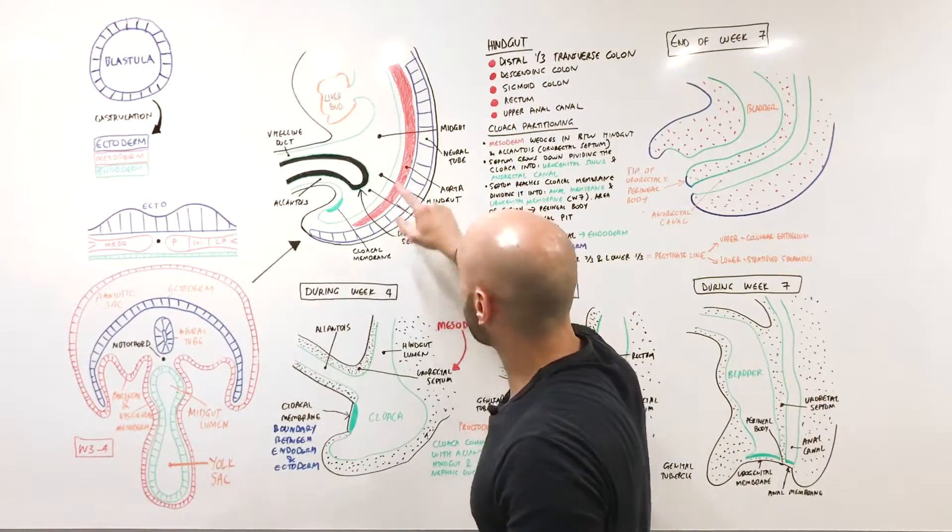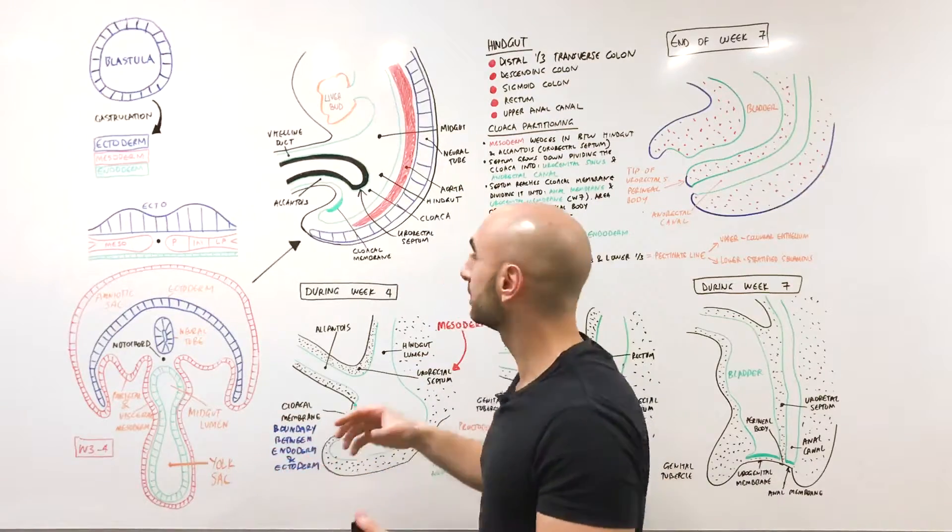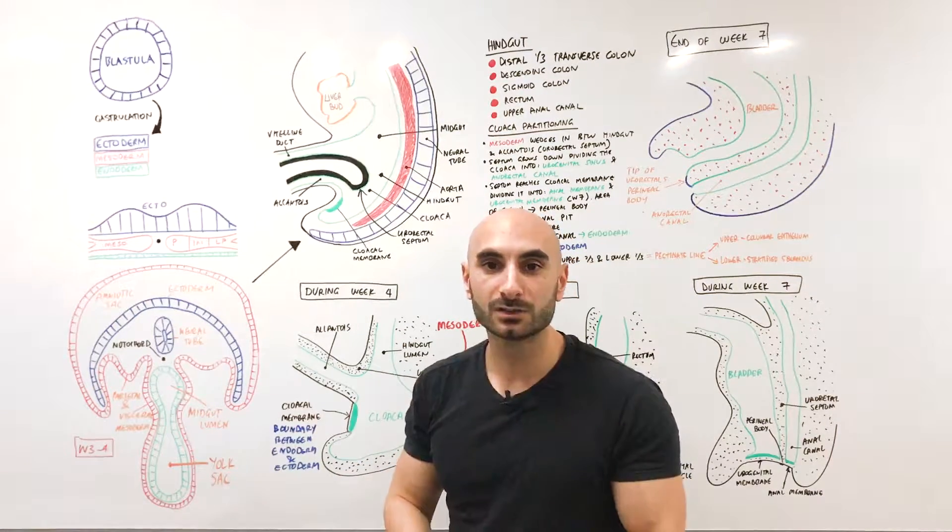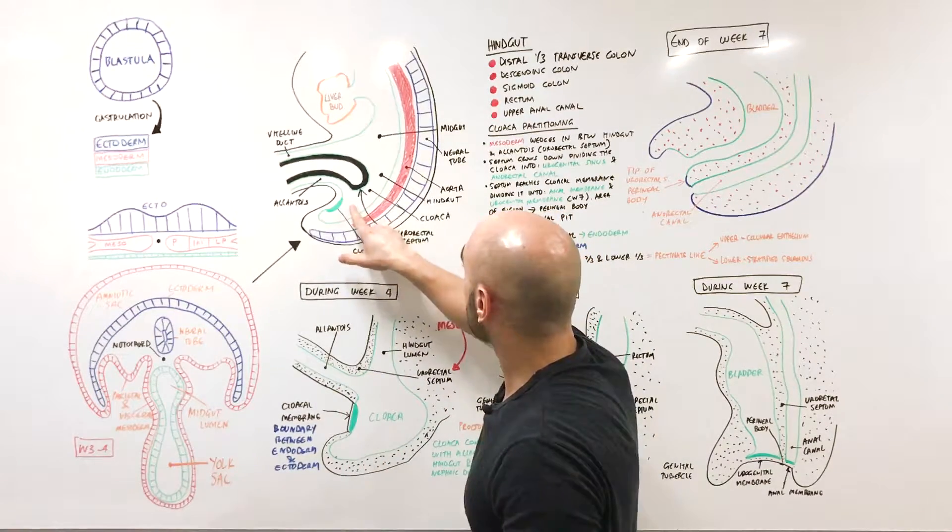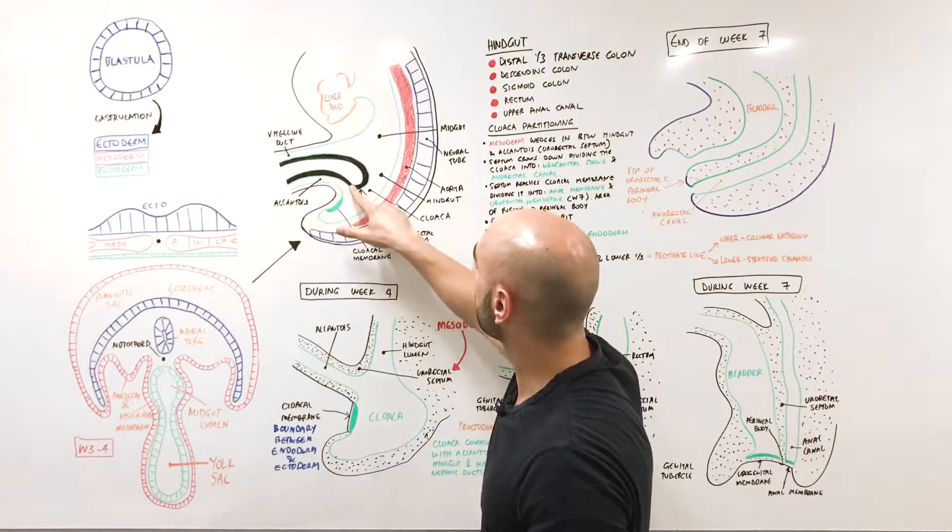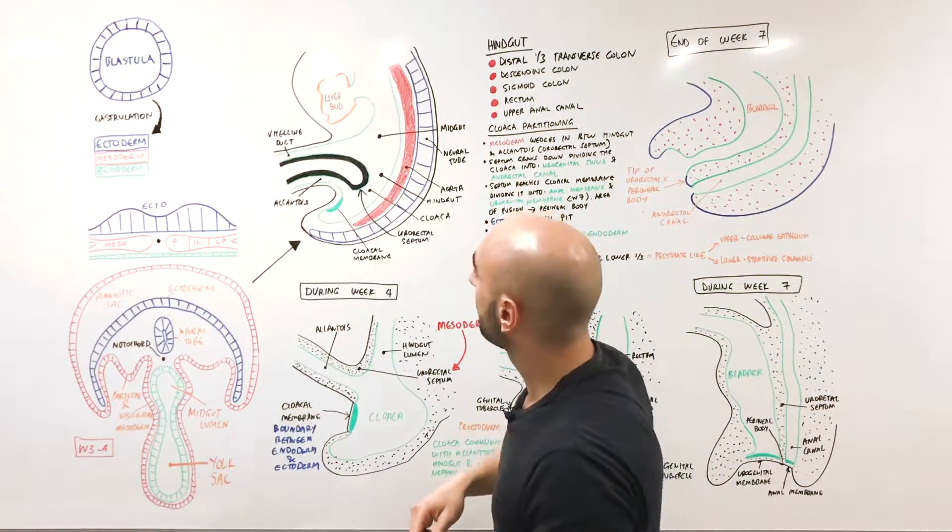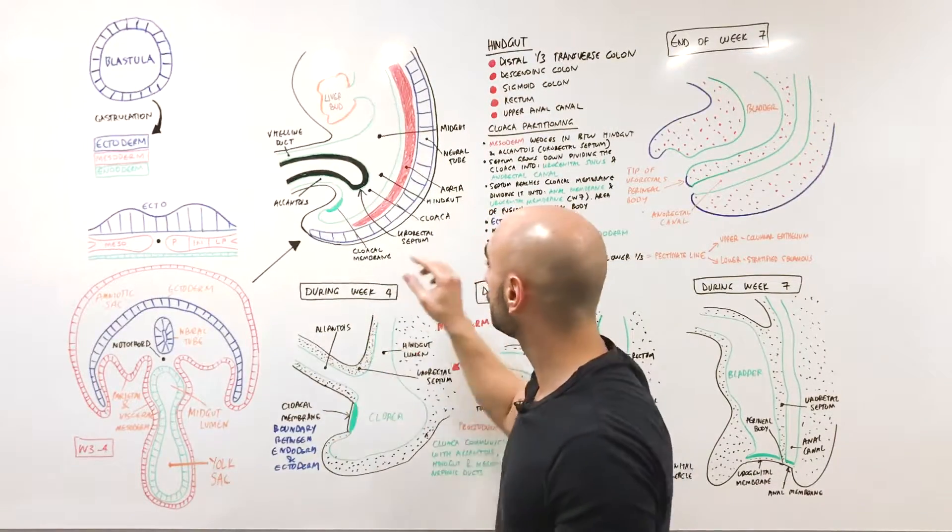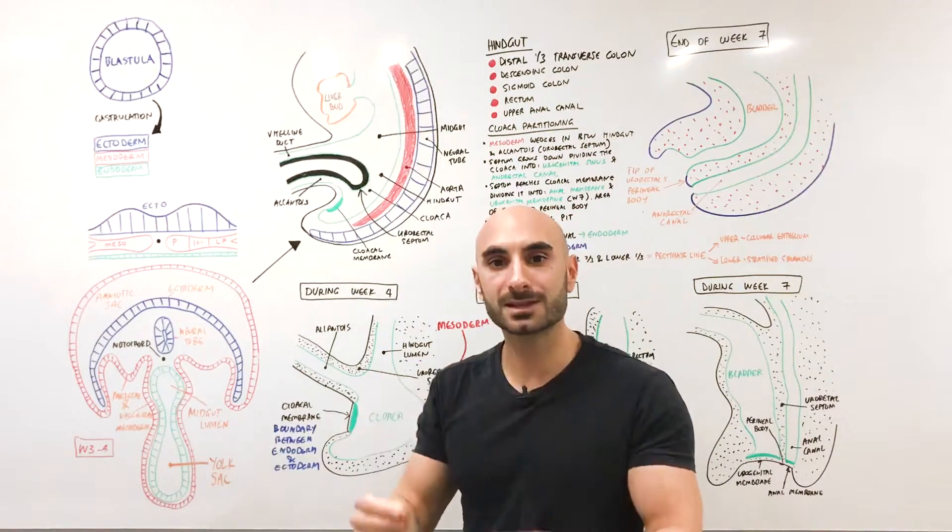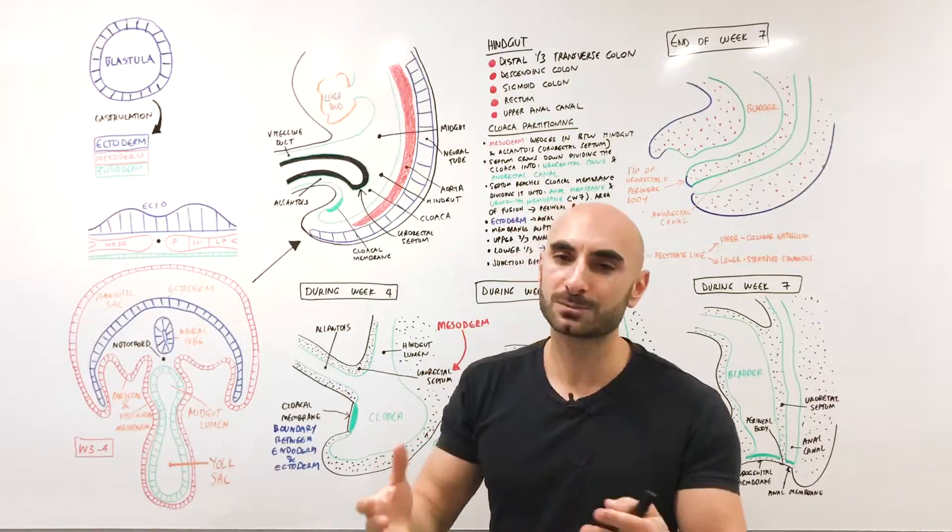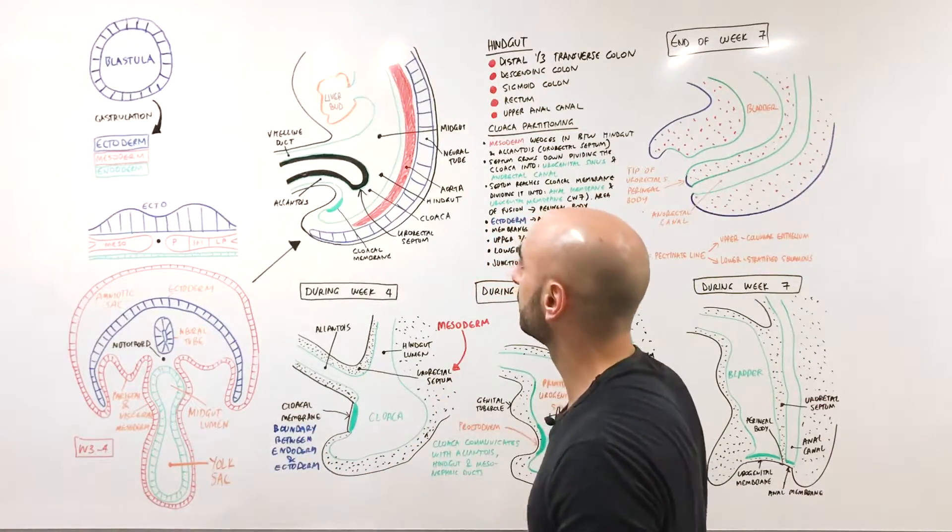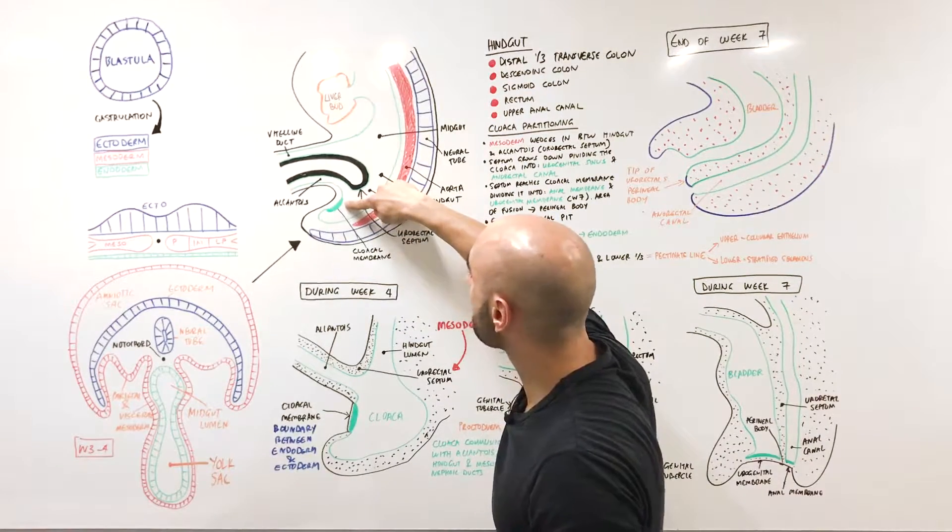The terminal end in green—the endoderm or the GIT—is called the cloaca. The cloaca gives rise not just to GIT components but also to urogenital components. The hindgut is in communication with the allantois through the cloaca. In thick black over here we have the urorectal septum, and this black is all mesoderm. The urorectal septum is derived from mesodermal tissue. This urorectal septum will actually partition the cloaca, dividing it into anterior and posterior parts—a front part and a back part. At the cloaca we have a cloacal membrane over here.